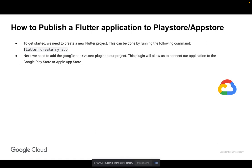Next, we need to add the Google Services plugin to our project. This plugin will allow us to connect our application to the Google Play Store or Apple App Store. To add the Google Services plugin, we need to open the pubspec.yaml file in the root directory of our Flutter project. This file contains information about the project such as its name, version, and dependencies.